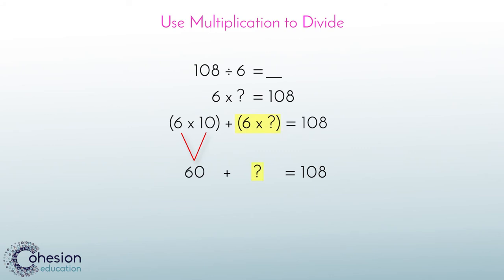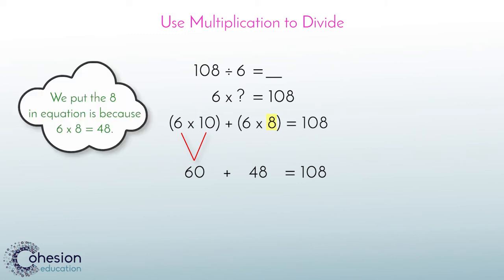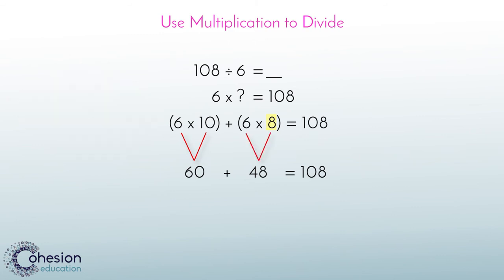Next, we will find another number that is a multiple of 6, but this time it needs to equal 108 when added to 60. If we think mentally, we know we need to add 48 to 60 to get a total of 108. Therefore, 48 will be the second number we will split 108 into. In our equation 6 times blank, we will need to put an 8 there. The reason we put the 8 in the equation is because 6 times 8 is 48.